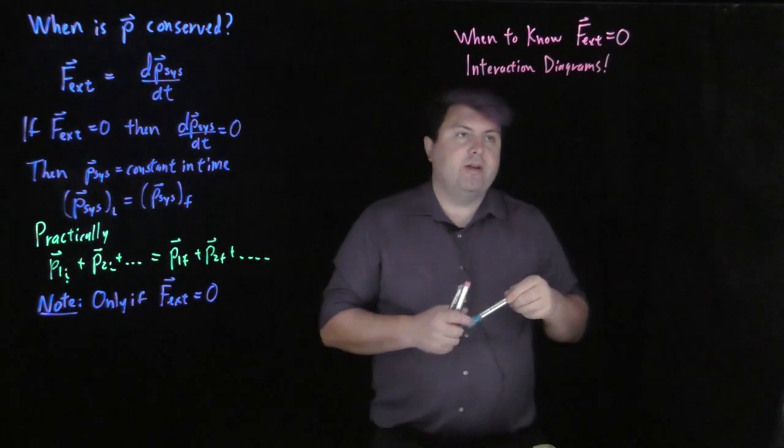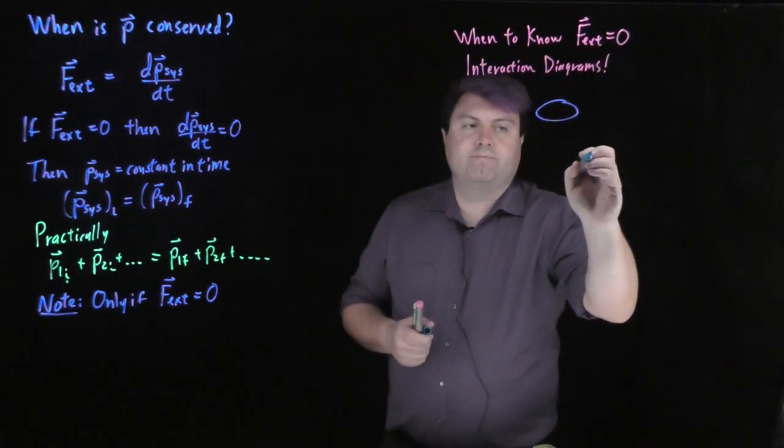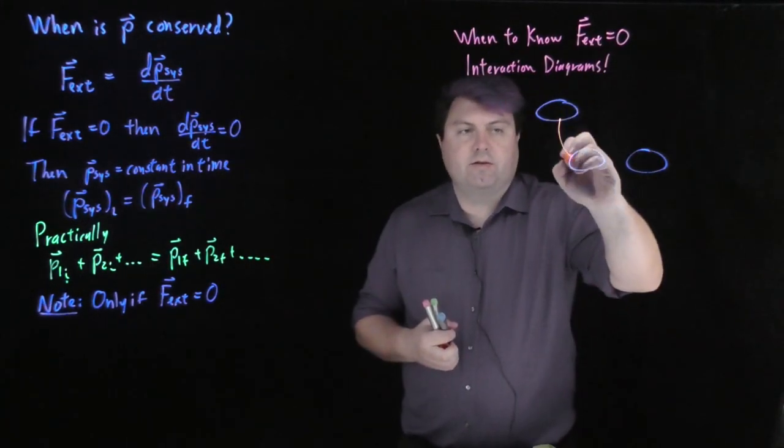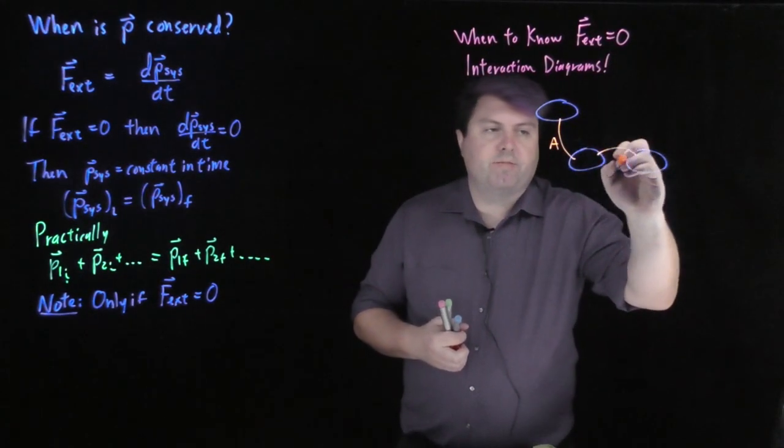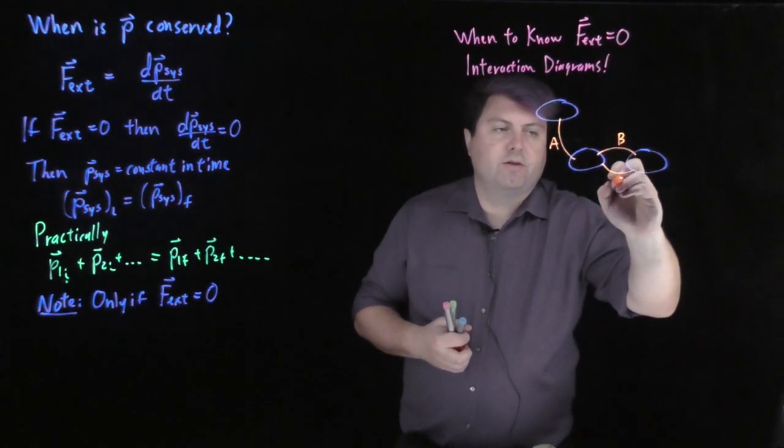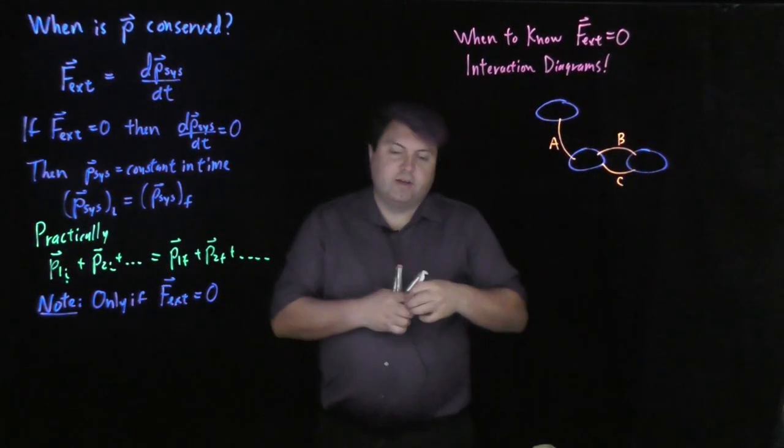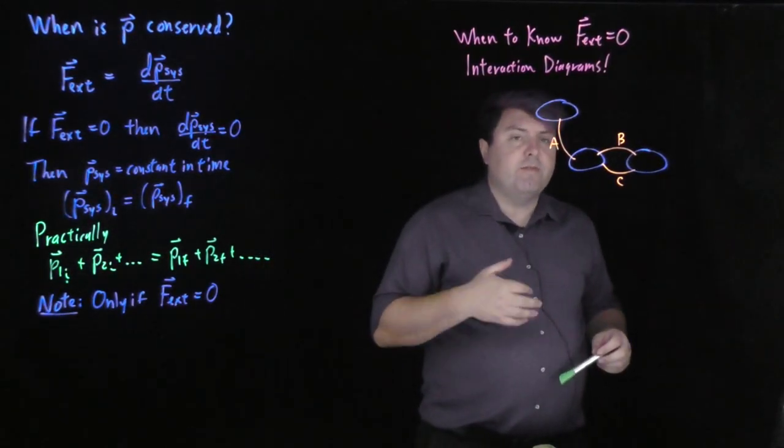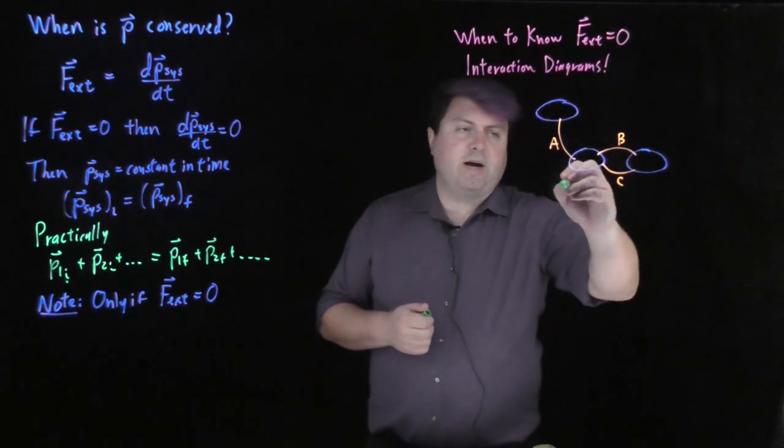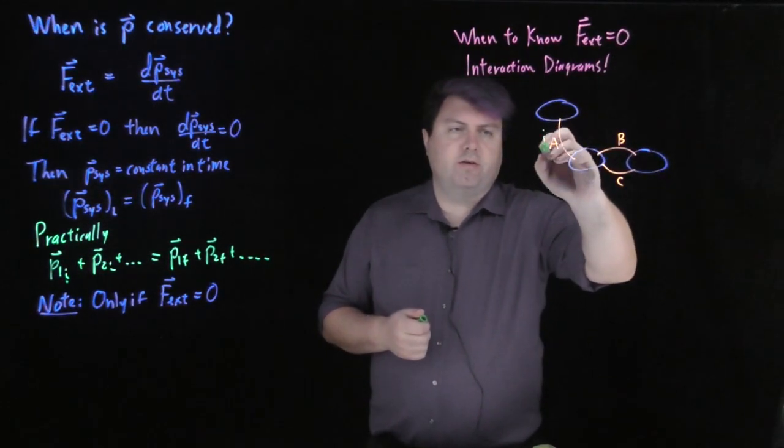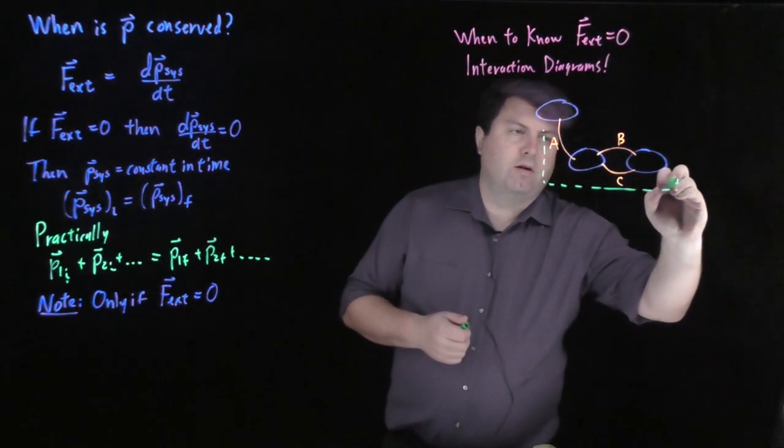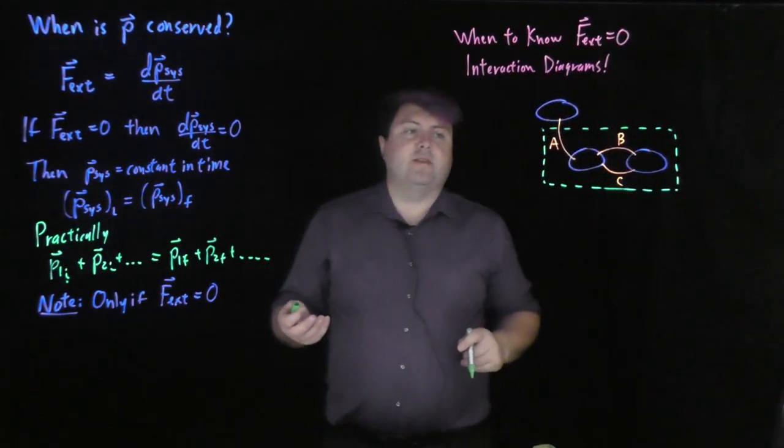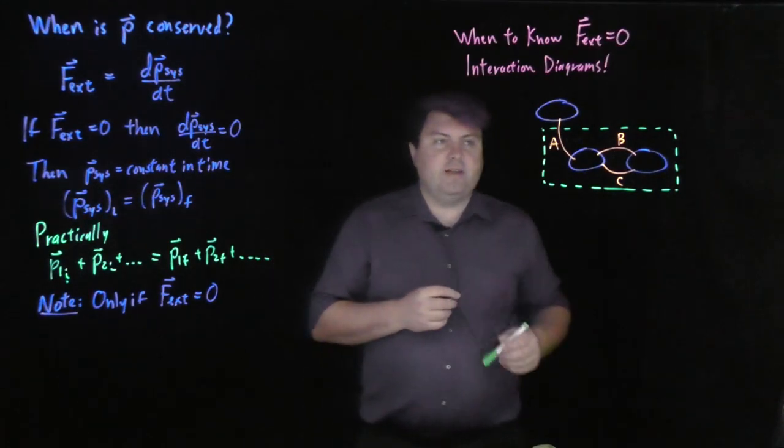So if we have an interaction diagram with some number of objects and then some number of forces or interactions on those objects, then we can define systems in which momentum is conserved and we can define systems in which momentum is not conserved. So if I was to do just this one, is momentum conserved in this case? So pause along and see if you can answer.